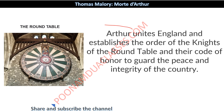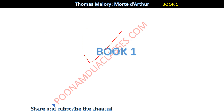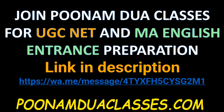So this has been our introduction. King Arthur unites England and establishes the order of the Knights of the Round Table and the code of honor to guard the peace and integrity of the country. In this video we have covered King Arthur's background. In the next video we will do Chapter 1, and then Chapter 7, where we will learn more about all of King Arthur's expeditions and his further life. I really hope this video is very useful for your examination. In future you will keep getting similar videos for your Master's preparation in Delhi University. If you want to join classes for UGC Net and MA English entrance preparation, the link to get connected for admission has been given in the description.